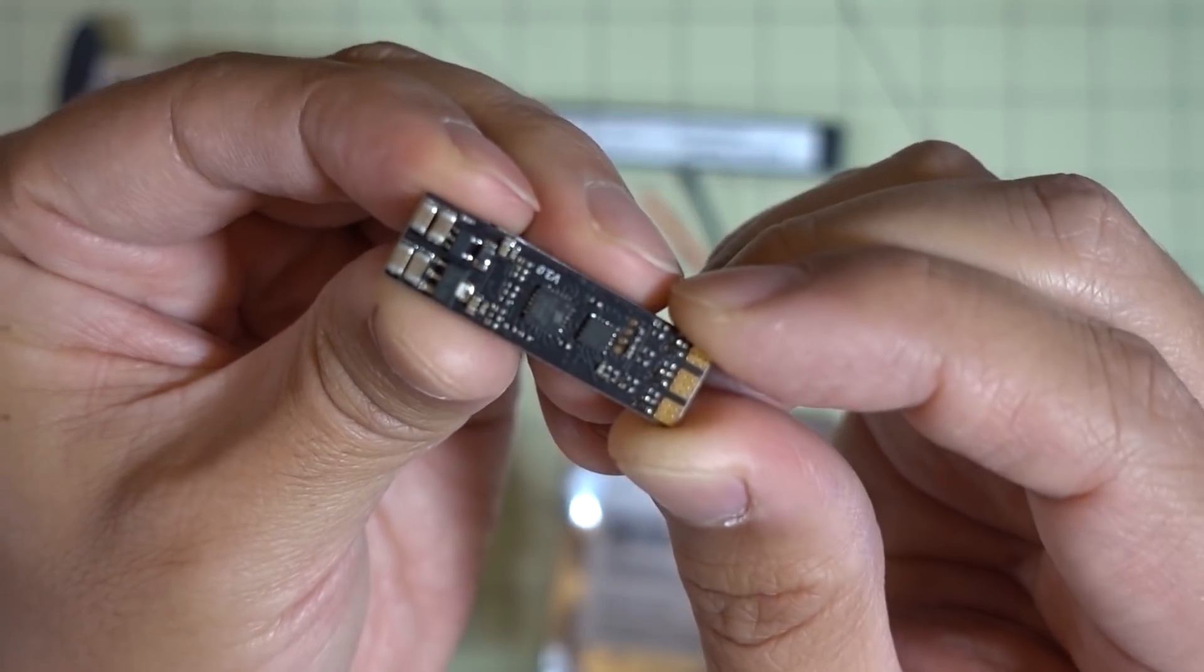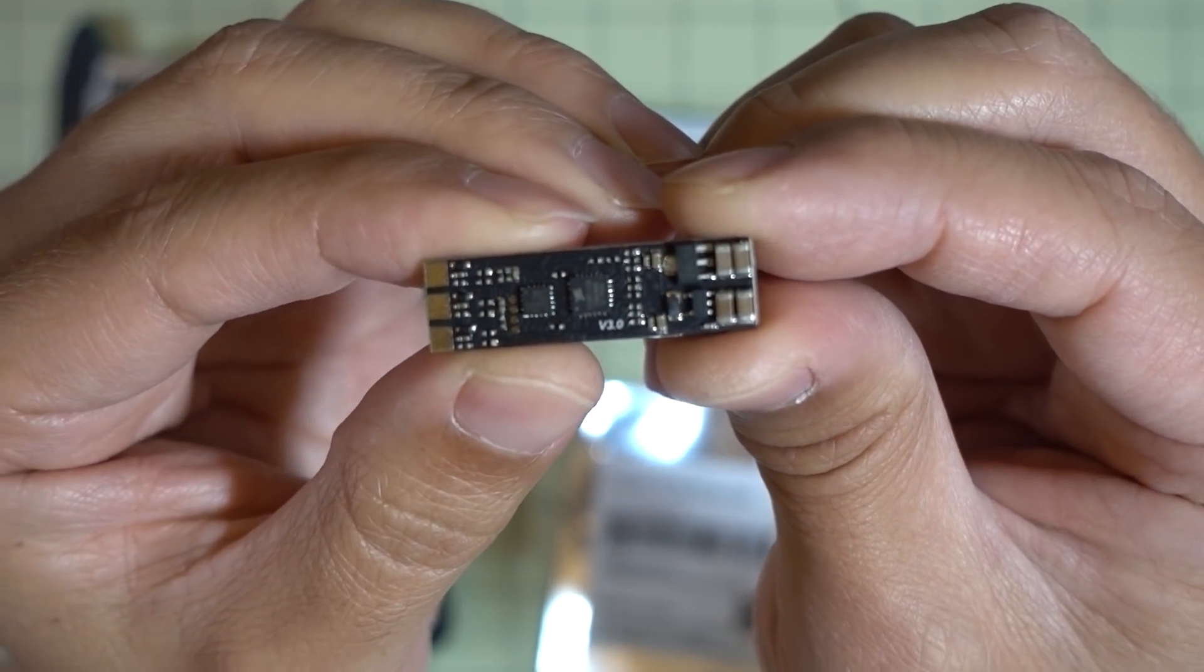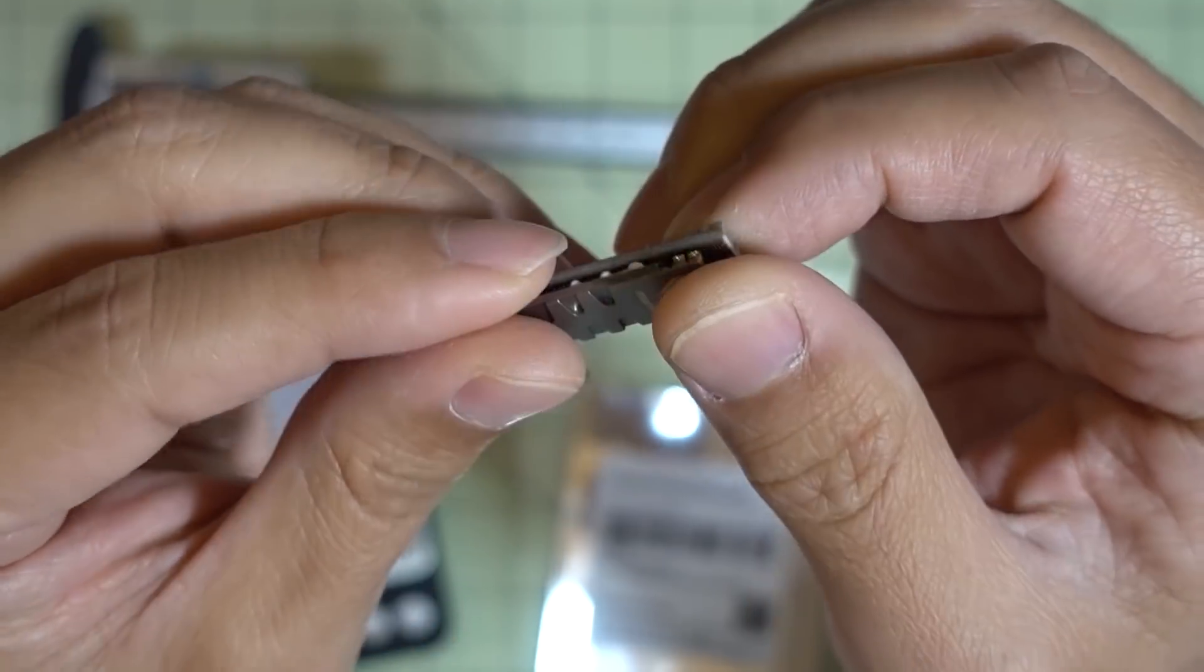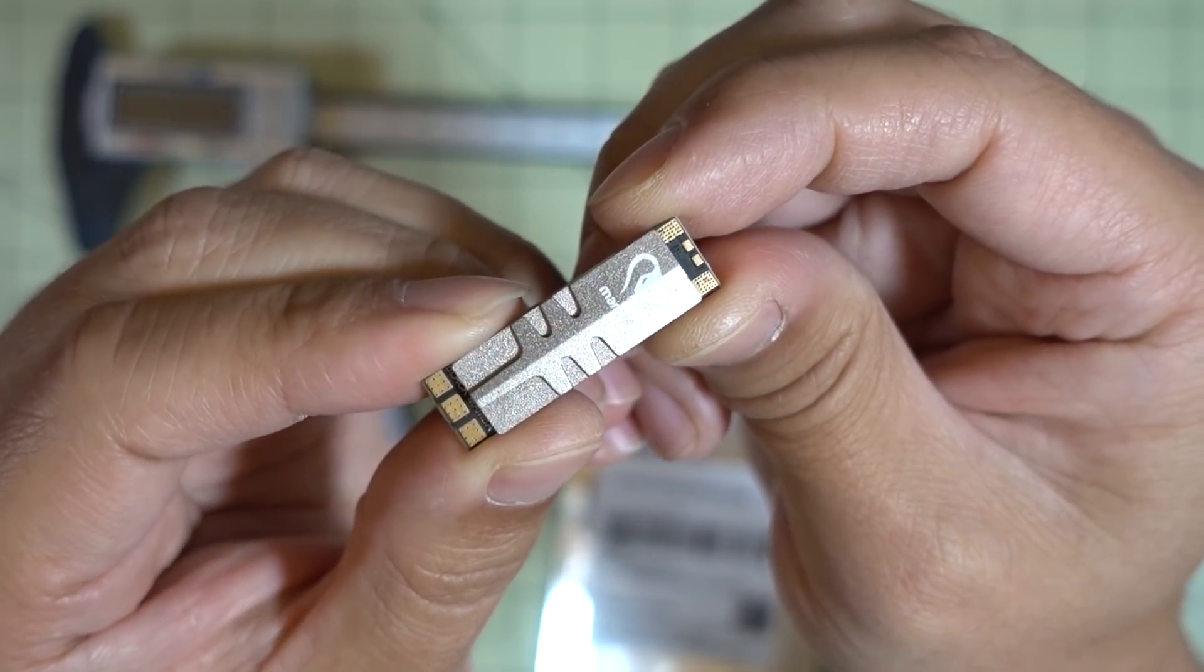Very skinny ESC. This is meant for those arms that are very skinny, for those ultralight builds like the Floss, for example. And I believe they have these on the new Diatone GTM500.